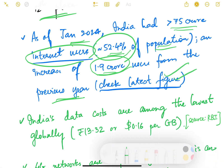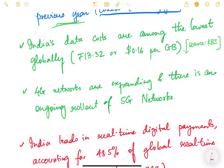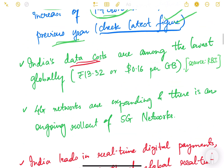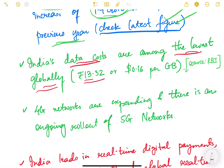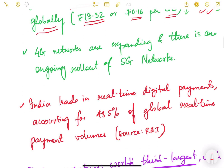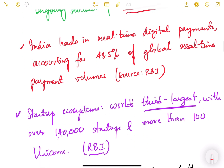Do check the latest figures as this is dynamic and will change over the years. Regarding data cost, India is among the lowest in the entire world — data costs just ₹13 per GB, which is about 16 cents, as reported by the RBI. This is one of the cheapest data rates in the world, enabling even poor people to use internet and digital technologies. 4G networks are expanding and there is an ongoing rollout of 5G networks as well.